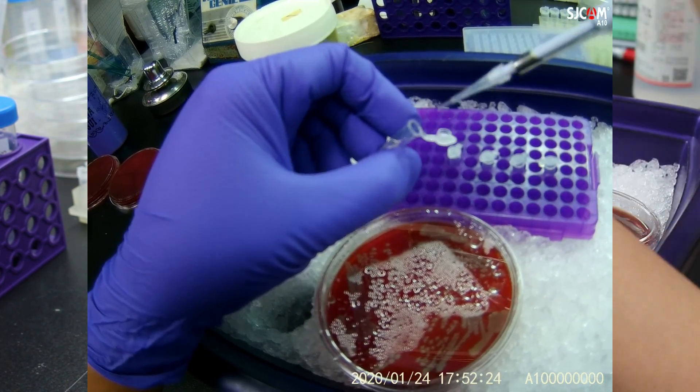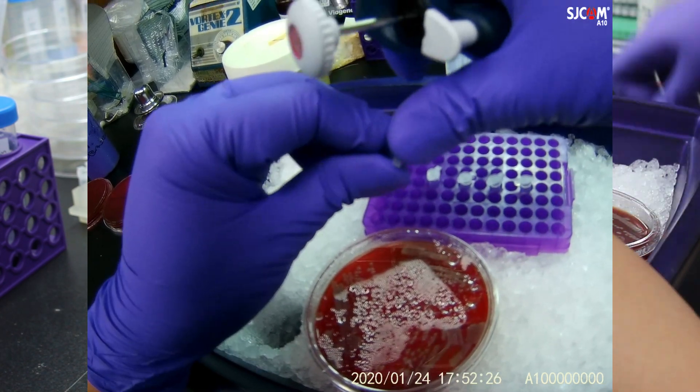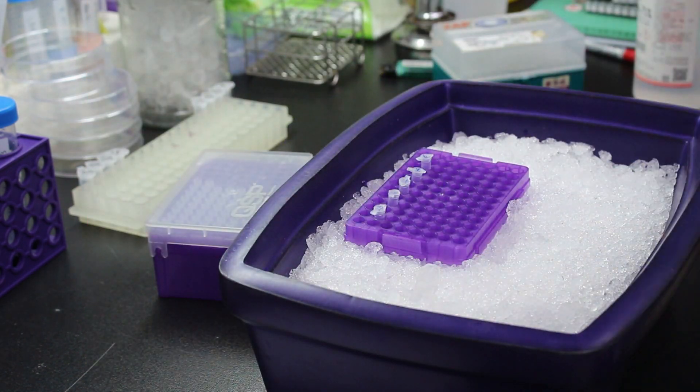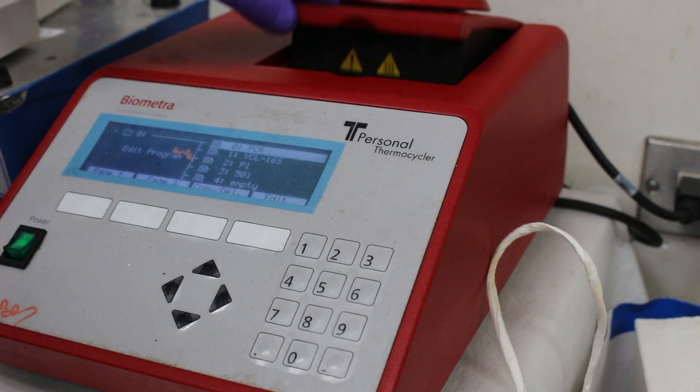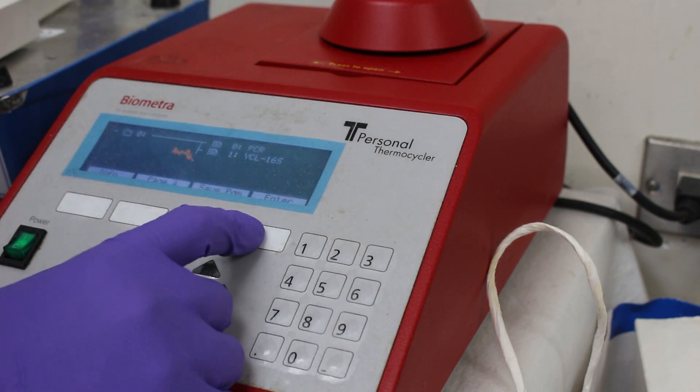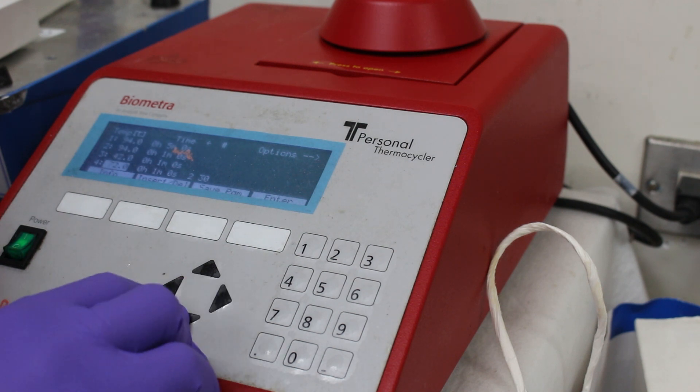Do not use too much bacteria. It will interfere the PCR process. After all the ingredient has been mixed thoroughly, put the PCR tube into PCR machine and proceed as standard PCR.